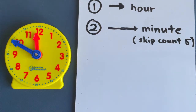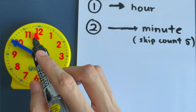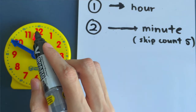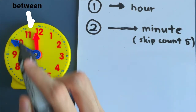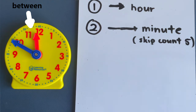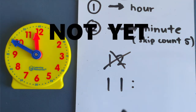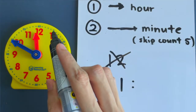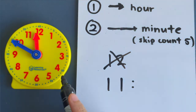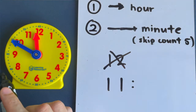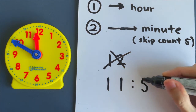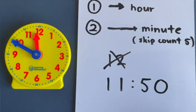Next example — follow the steps again. What time is it? Look at the hour hand. It is not pointing at 11, and not pointing at 12 — it's in between, not yet at 12. So do not write down 12 — that would be the wrong answer. It is still 11 o'clock; it's almost 12 but not yet 12. So we write 11. Second step: look at the minute hand and skip count in fives — 5, 10, 15, 20, 25, 30, 35, 40, 45, 50 — stop. Write down 11:50.